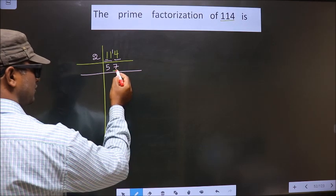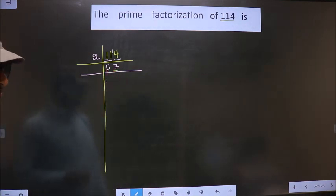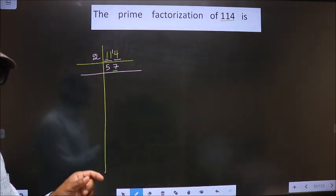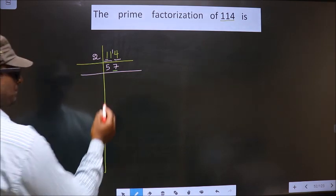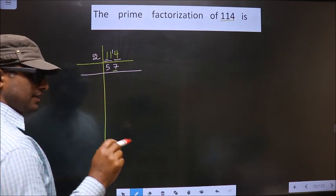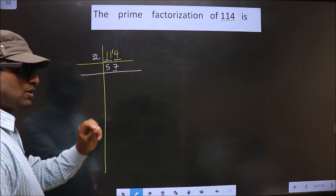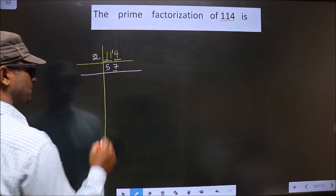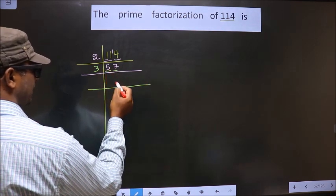Now to check divisibility by 3, we should add the digits. What I mean is add 5 plus 7, we get 12. Is 12 divisible by 3? Yes, so this number is also divisible by 3. So now we take 3 here. First number is 5. Close to 5 in the 3 table is 3 times 1 is 3. 5 minus 3 is 2, carried forward making it 27.